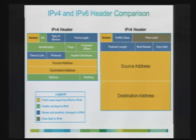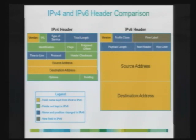Another field removed is the header checksum. When IPv4 was originally designed, not all data link layer protocols used error checking and correction mechanisms, and the data link layer was not as reliable as it is today. So there is no need for a header checksum in IPv6. The source address and destination address have been retained, but IPv4 uses 32-bit addressing while IPv6 uses 128-bit addressing space.